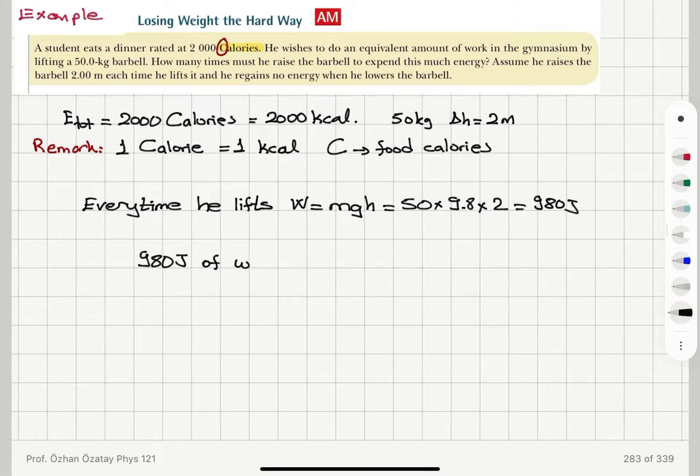So what is the heat equivalent of 980 joules of work? So 980 joules of work is equivalent to 980 divided by 4.186. That is 234.11 calories. The total energy we would like to spend was 2 times 10 to 6 calories, 2,000 kilocalories.